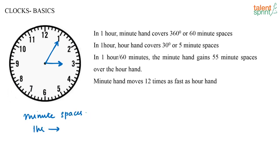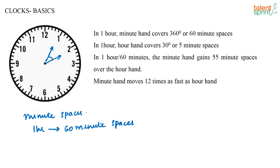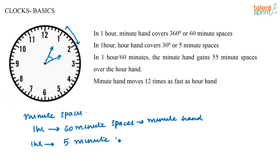In one hour's time, the minute hand starts from 12, completes one full circle, and comes back to 12 — so it covers 60 minute spaces. In the same one hour, the hour hand covers only 5 minute spaces. For example, from 1 o'clock to 2 o'clock, the clock has 12 equally spaced markings, and the full circumference is 60 minute spaces, so the distance between markings is 60 divided by 12, which equals 5 minute spaces.